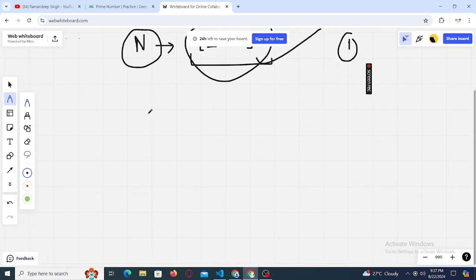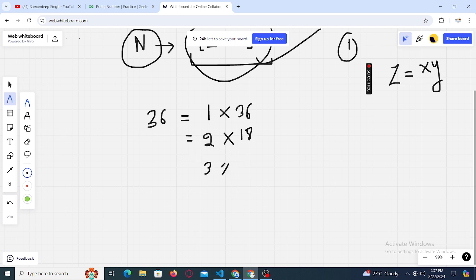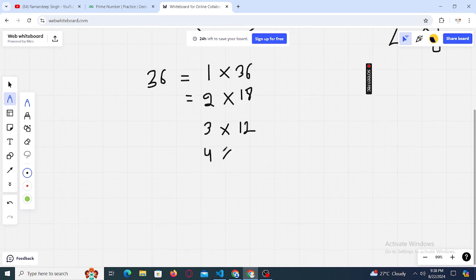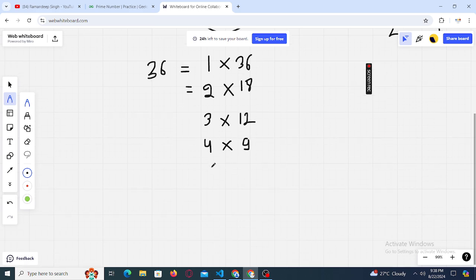The expected time complexity is square root of n. So in order to solve it in the given constraints, let's observe some things about the numbers. Let's take a number, let's say 36. 36 can be written as, any number z can be written as multiplication of two factors x and y. So 36 can be written as 1 into 36, it can also be written as 2 into 18, and 3 into 12, and 4 into 9. It can also be written as 6 into 6.